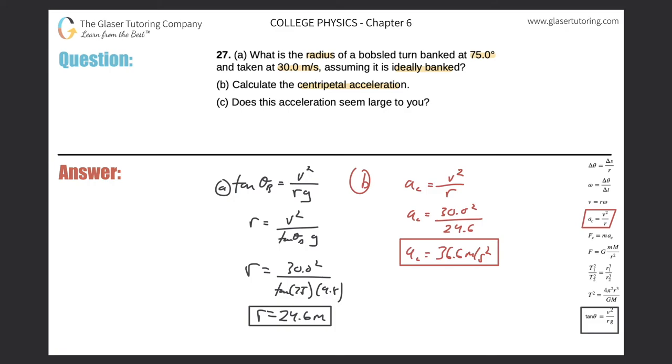Now let's take a look at letter C. So it says, does this acceleration seem large to you? Well, I mean, not really. But why don't we try to find a ratio here between maybe, let's find out how many Gs this is. That might give us a little more context. So 36.6 all over 9.8. That will tell us how many Gs. So 36.6 divided by 9.8 comes up to 3.73.